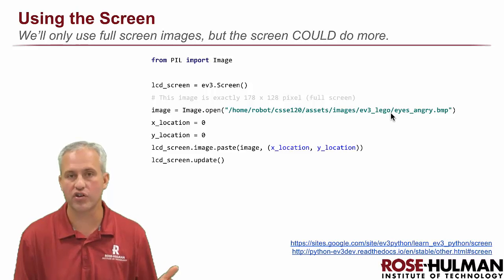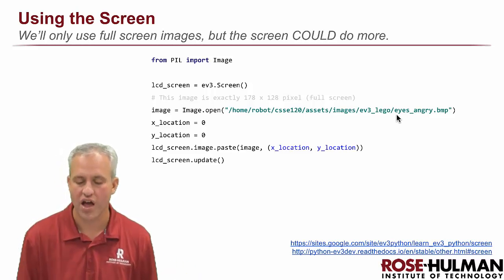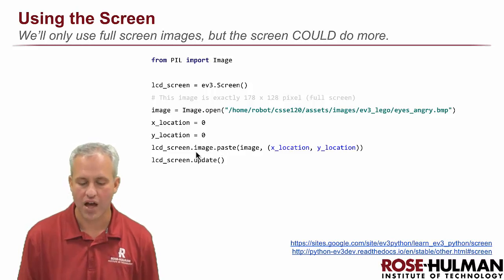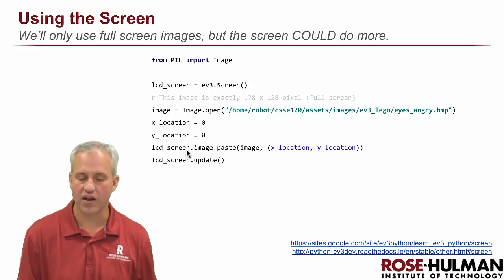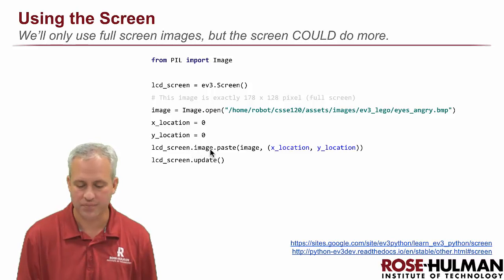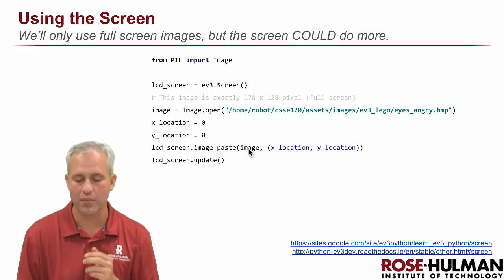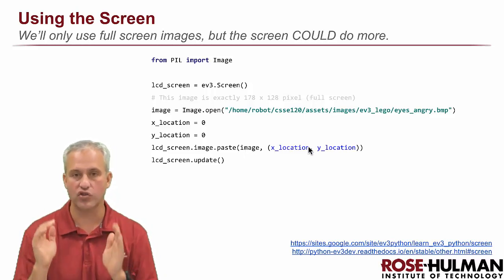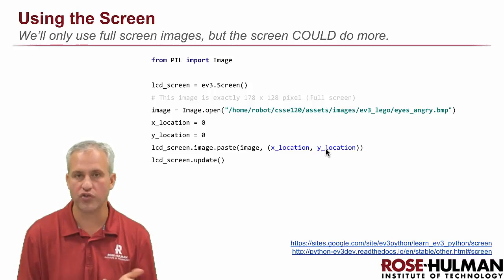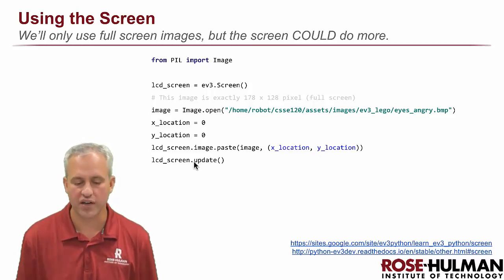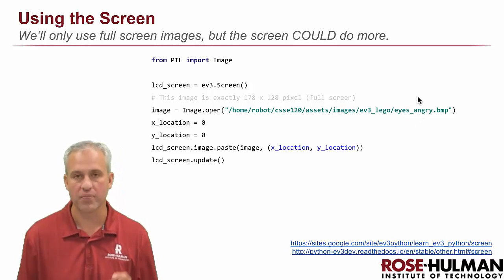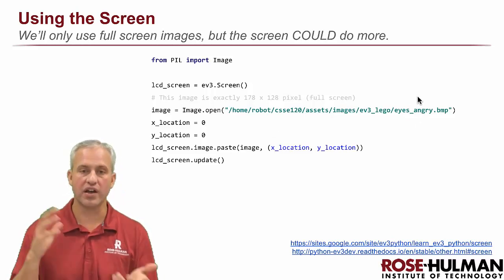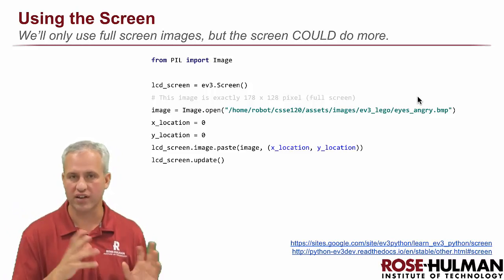The syntax for displaying a full-screen image: you import the Image class, construct an LCD instance, then construct an image by opening a file — I have a bunch of images for you that are exactly the right size. There's a ton of different images in your assets folder, including one called 'angry eyes'. Once you have the image and LCD screen, you call screen.image.paste with two parameters: the image and a tuple of the location, which is just (0, 0). Then you call dot_update to actually draw the screen. The only thing you ever have to change is the filename.